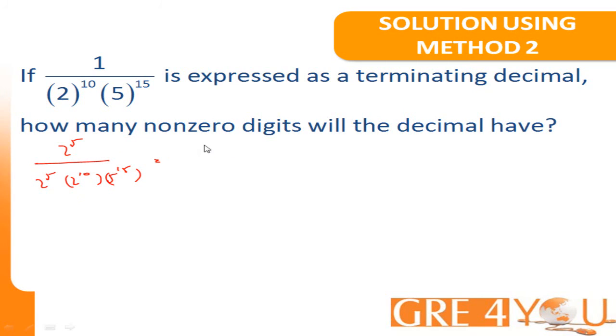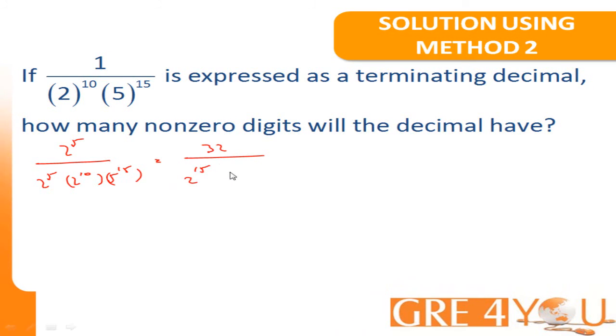This is equal to 2 to the power 5 is equal to 32 divided by 2 to the power 5 times 2 to the power 10 is equal to 2 to the power 15 times 5 to the 15. Just remind you exponent rule number one states that a to the power x times b to the power x is equal to a b is the whole power x. This is equal to 32 divided by 2 to the power 15 times 5 to the power 15 equals 10 to the power 15.